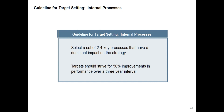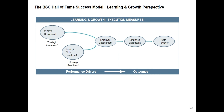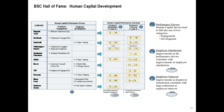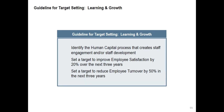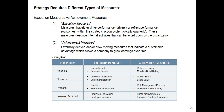The Hall of Fame success model for the learning and growth perspective includes examples of human capital development. For target setting in learning and growth: identify the human capital process that creates staff engagement and development; set a target to improve employee satisfaction by 20% over the next three years; set a target to reduce employee turnover by 50% in the next three years. Strategy requires two types of measures: execution measures — which drive performance drivers or reflect outcomes within the strategic action cycle, typically quarterly — and achievement measures, which are externally derived and slow-moving, indicating a sustainable advantage.